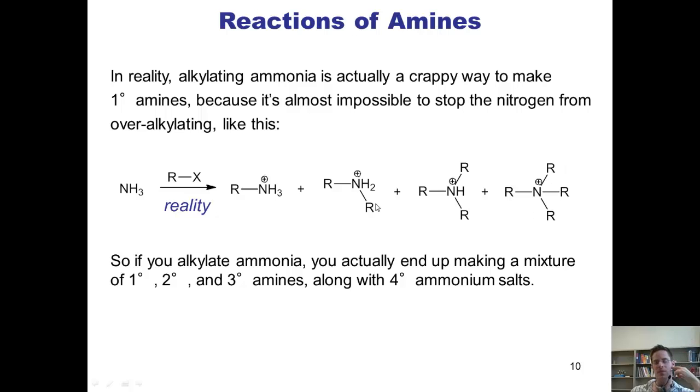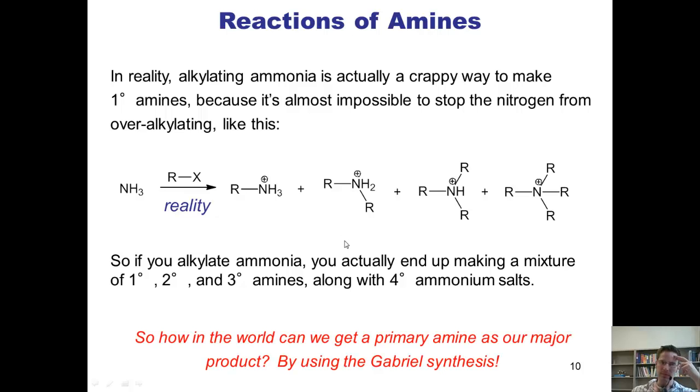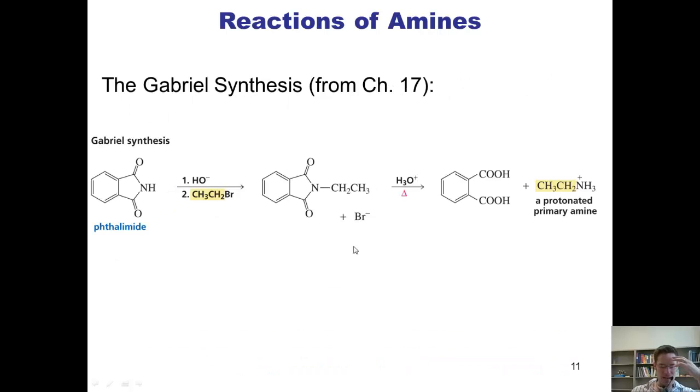This can be a problem if you're in a circumstance where you want to exclusively get one specific kind of amine, primary, secondary, tertiary, or exclusively get your ammonium salt. So how in the world can we deal with that? By using the Gabriel synthesis. So this problem can be circumvented using the Gabriel synthesis.